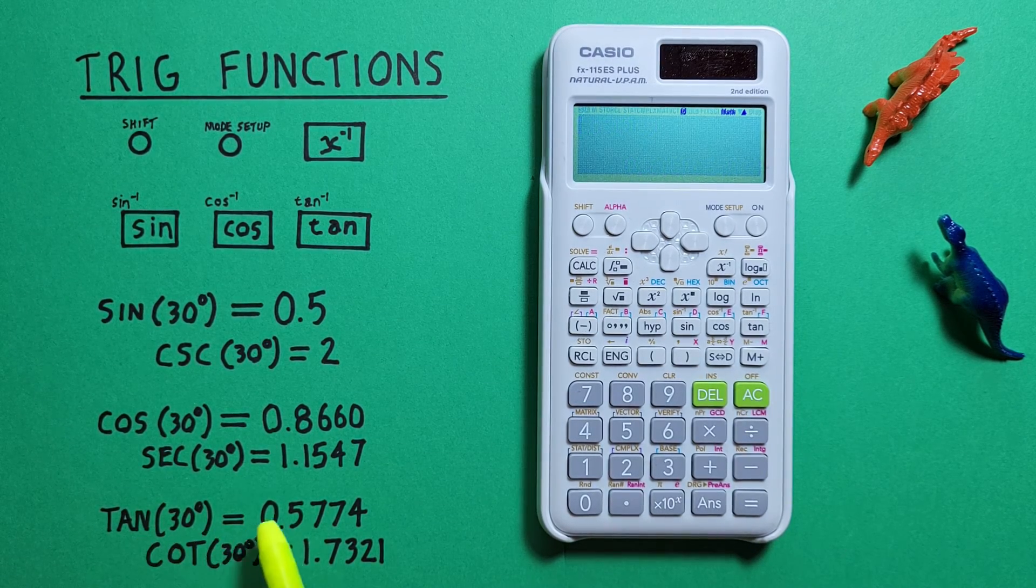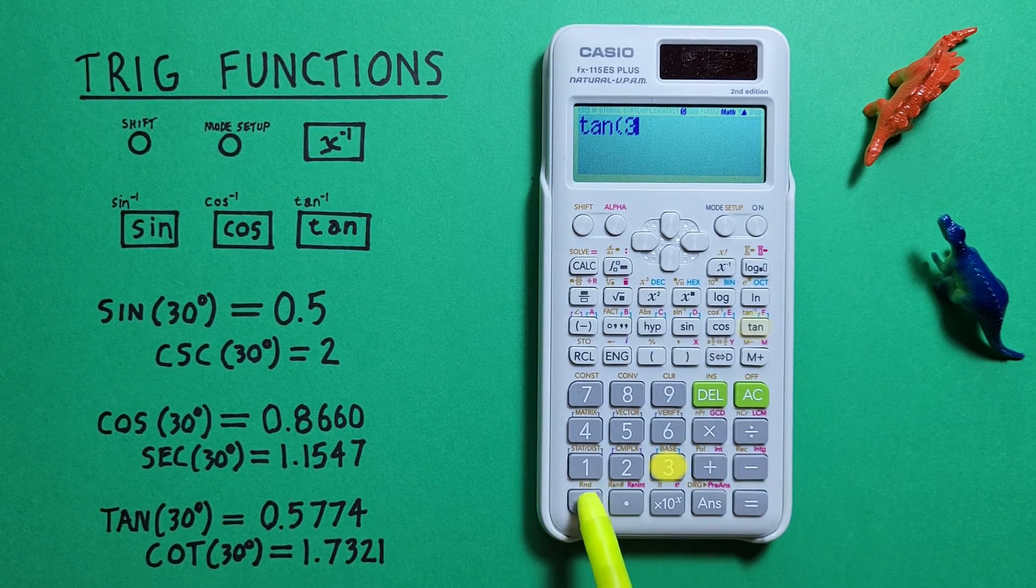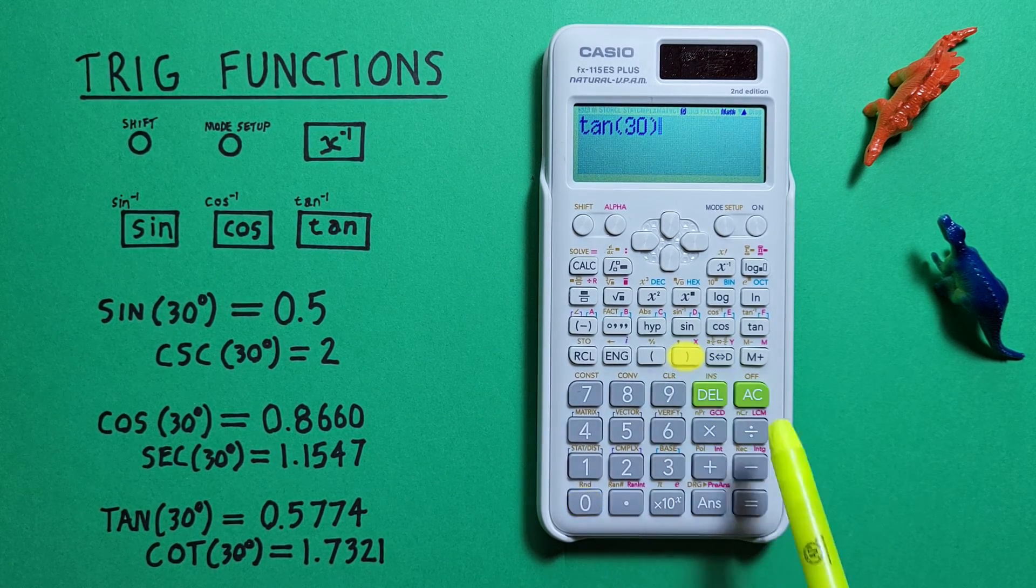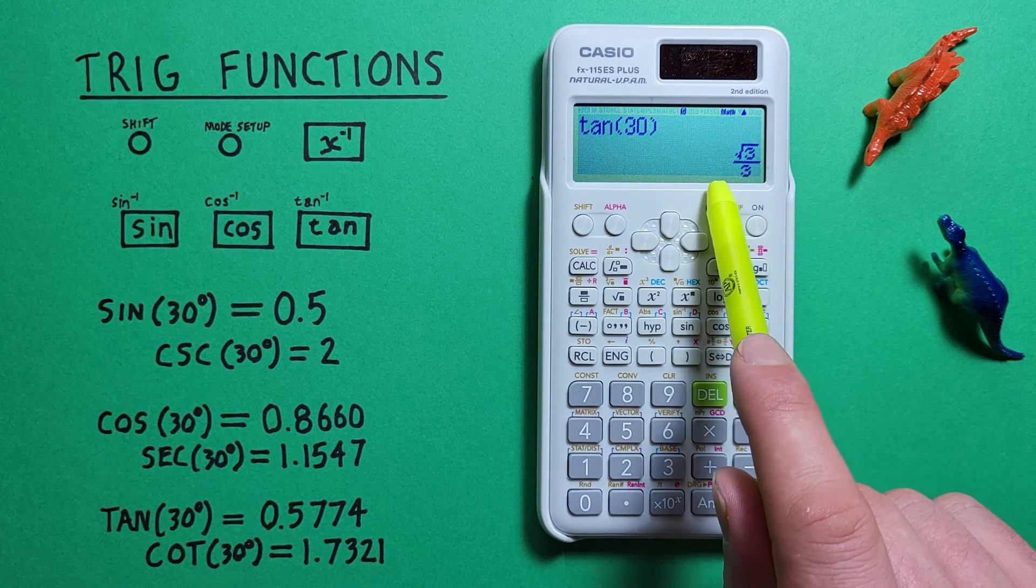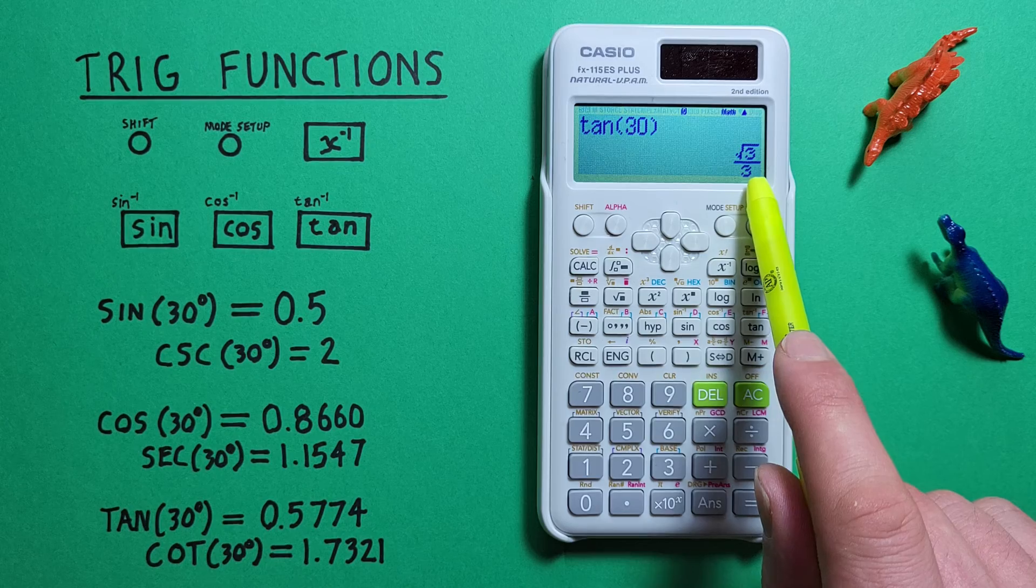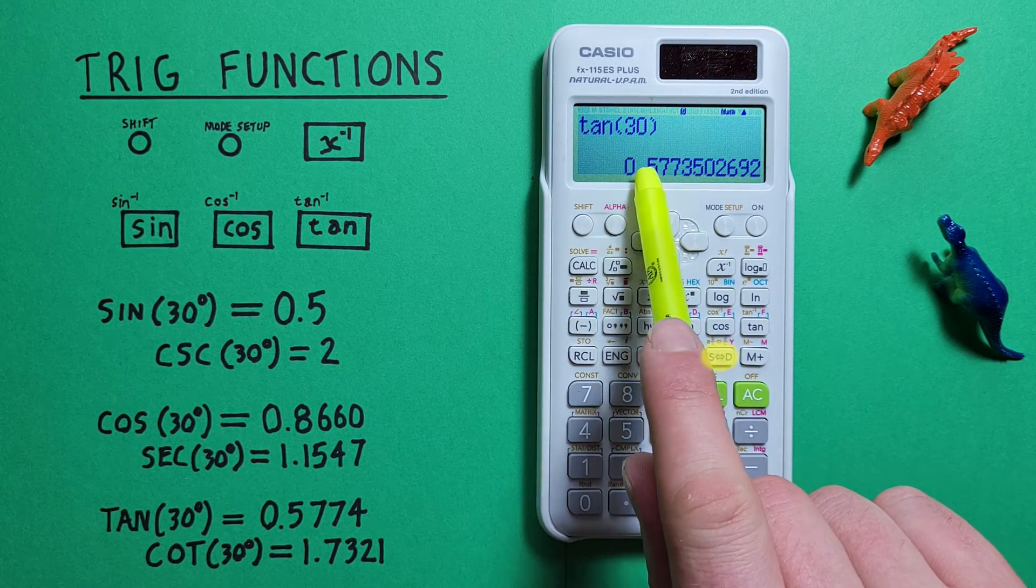And for tan we use the tan key, enter our 30 degrees, close our brackets, and press equals. And again we get a fraction which converts to 0.5773, etc.